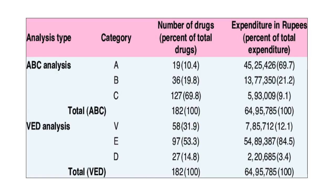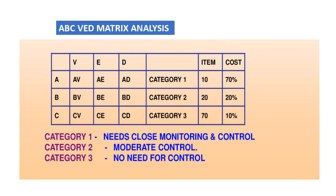Similar to ABC analysis, we can also perform VED analysis. We can create an ABC-VED matrix analysis by combining ABC and VED, resulting in 9 groups of drugs: AV, AE, AD, BV, BE, BD, CV, CE, CD.